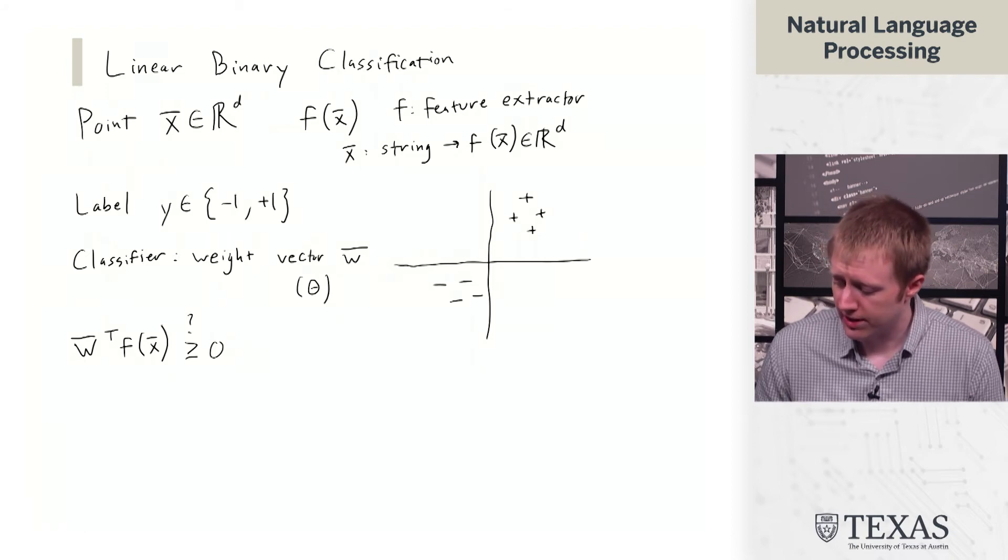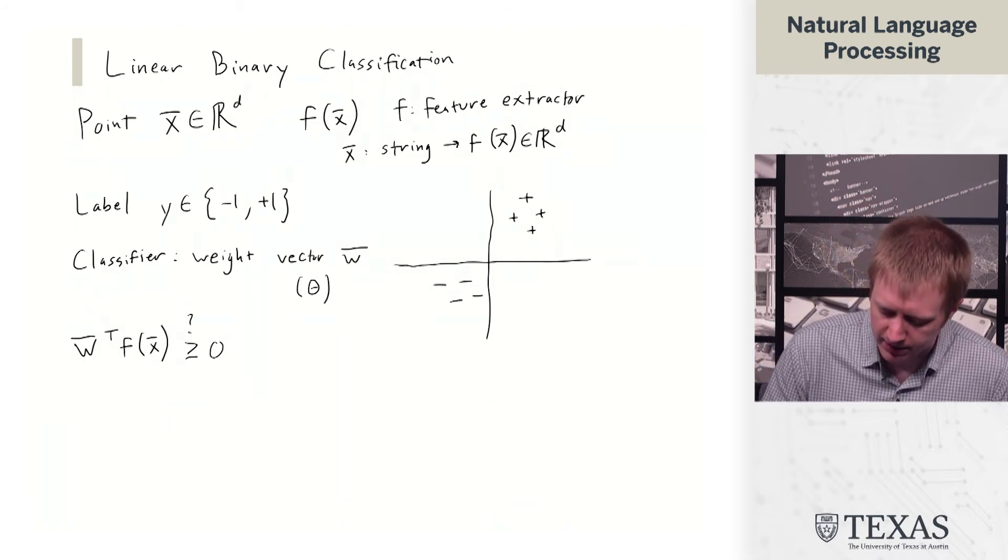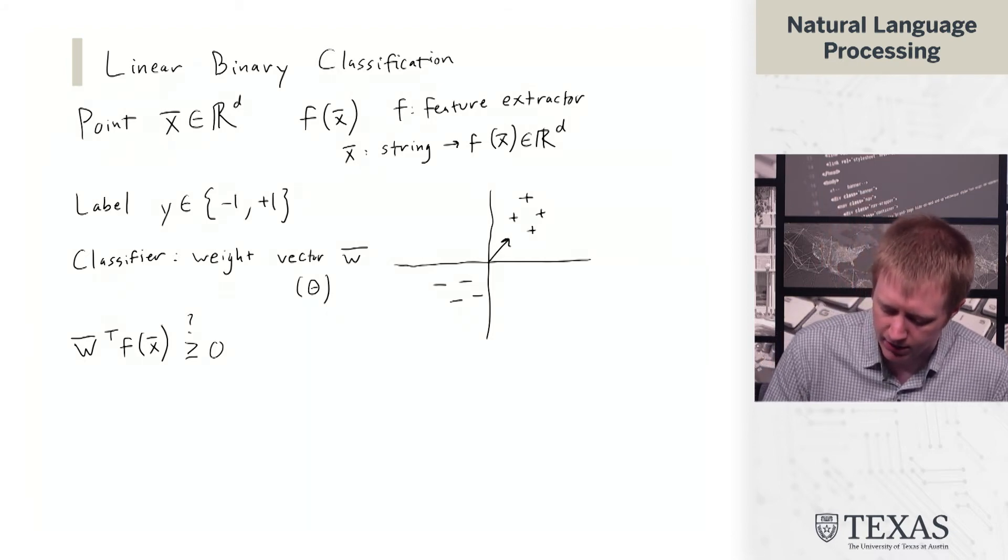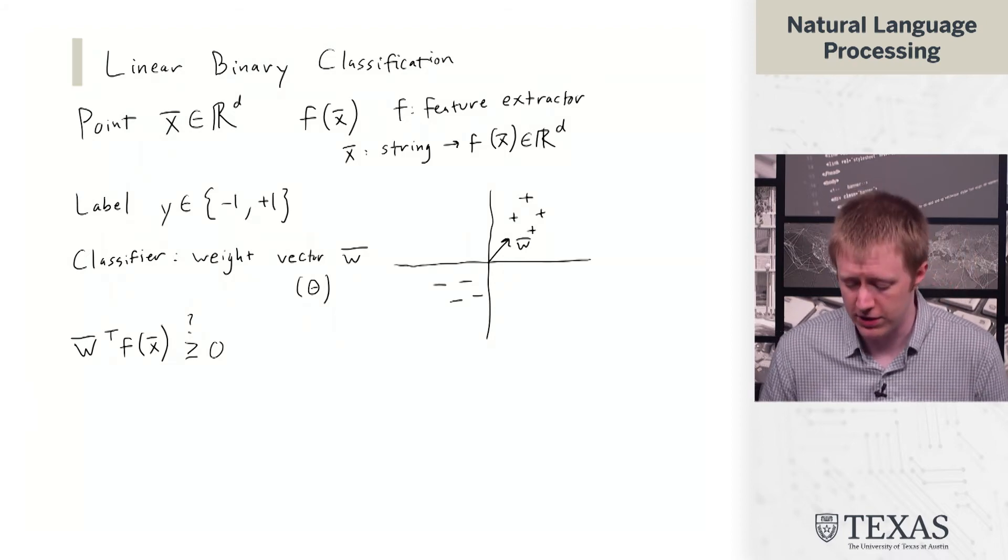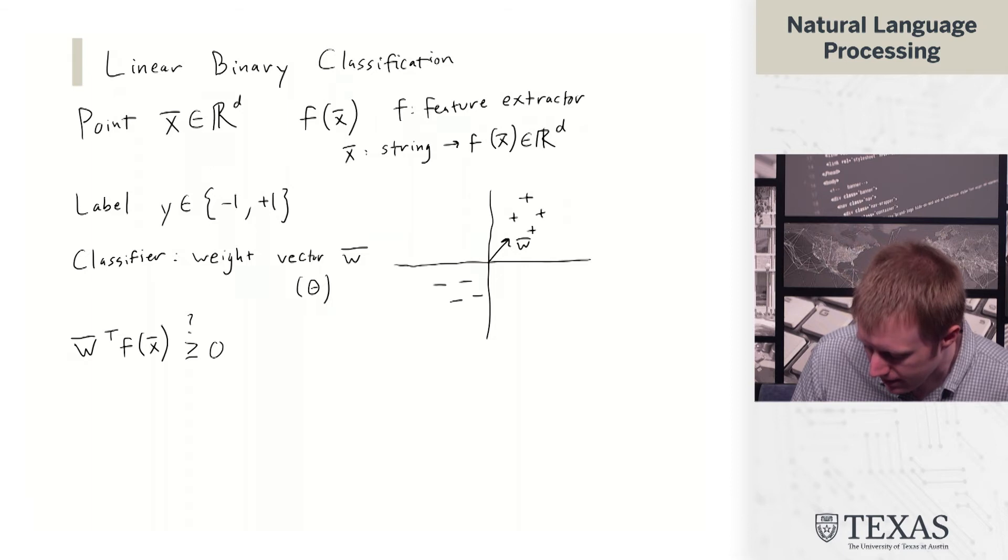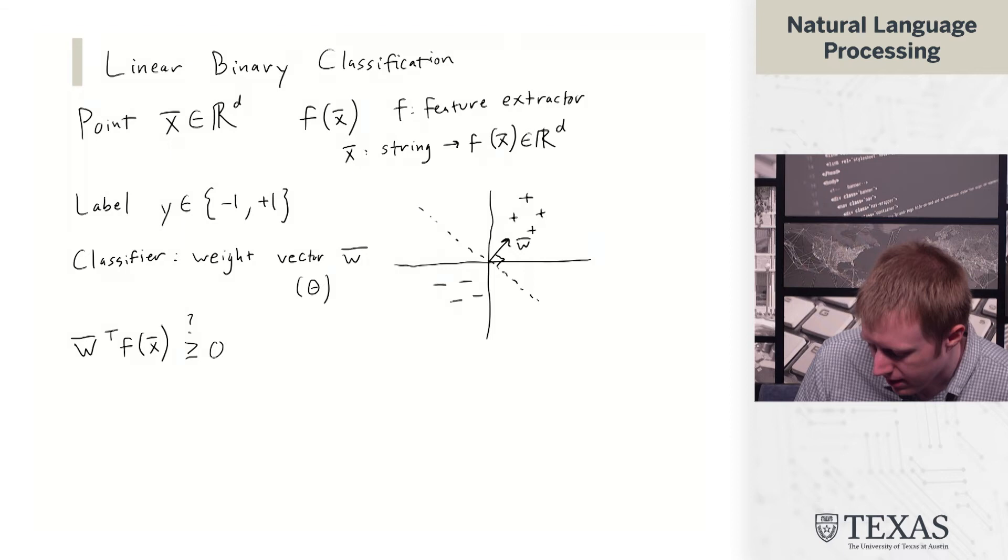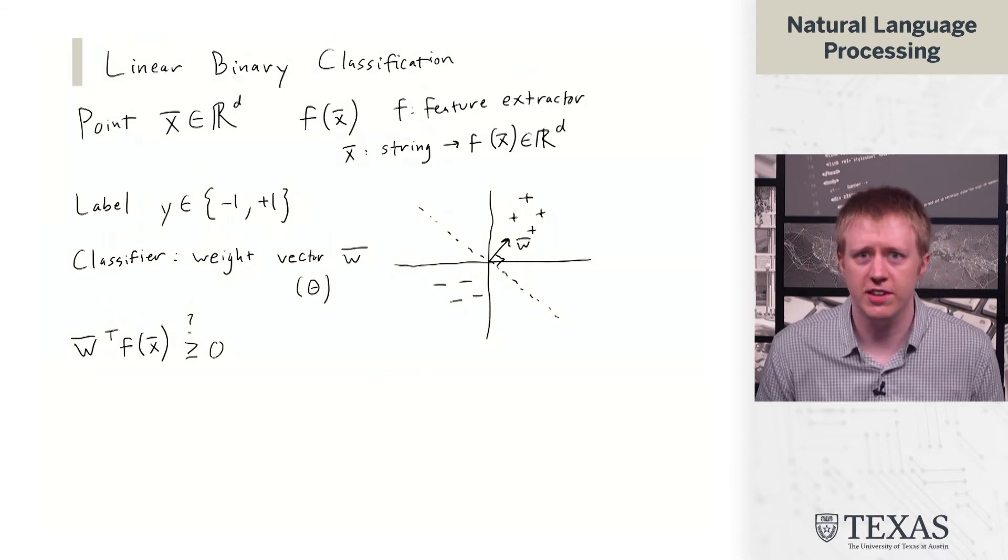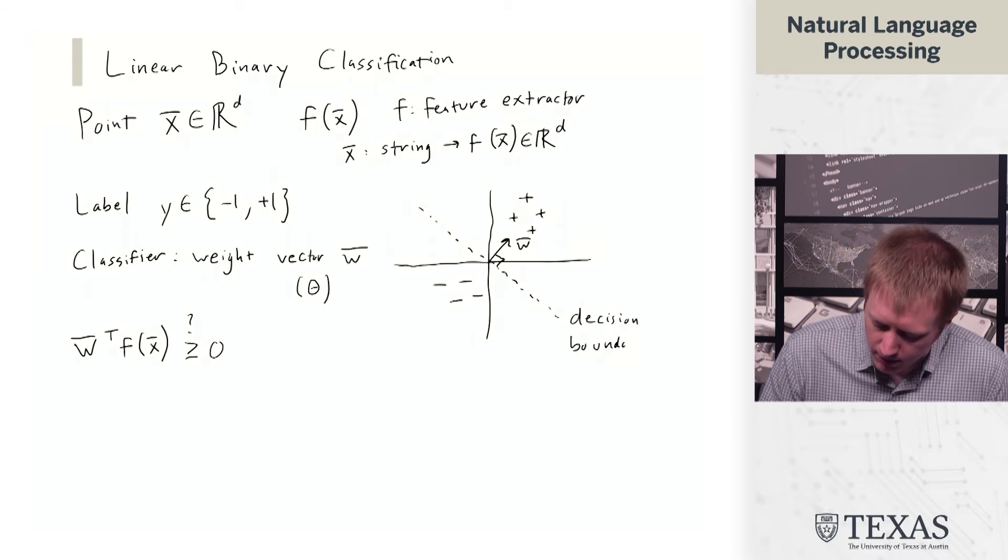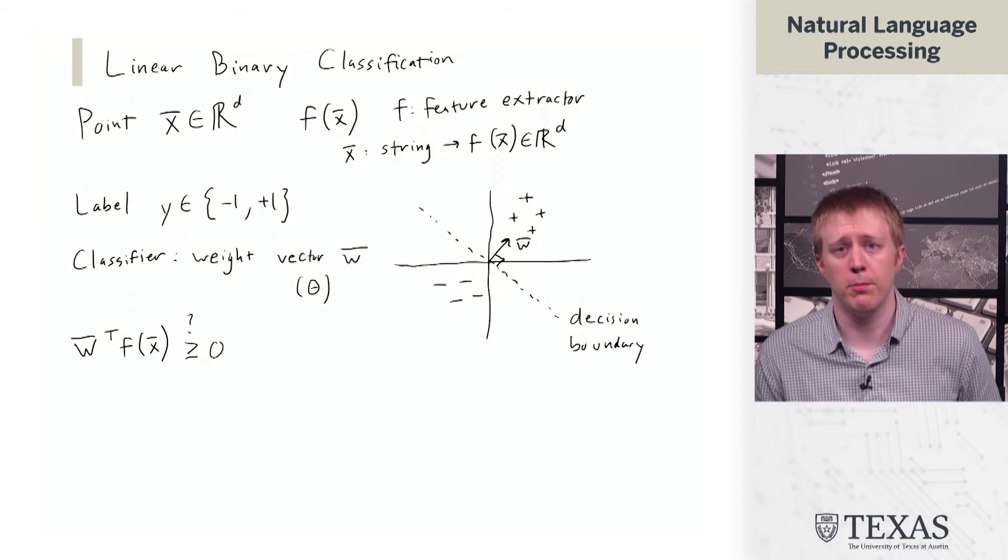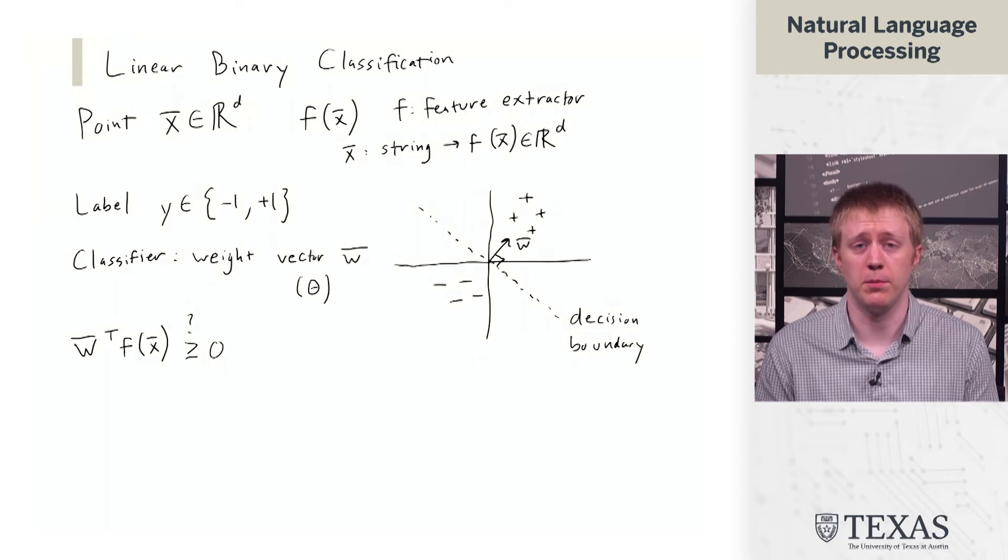Essentially, the way we can think about this is that the weight vector points in some direction in this feature space. And then we've got this decision boundary that's perpendicular to the direction that w is pointing.